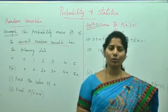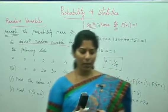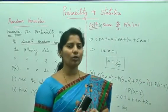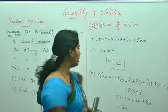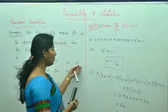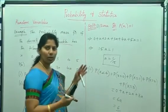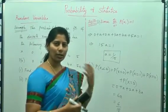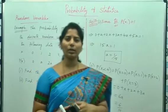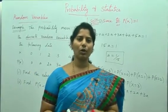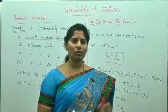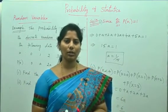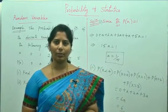As I told you earlier, they will not give you simple values like just up to 5 or something. More than 10 data points only they will give you to find the solution for a discrete random variable.